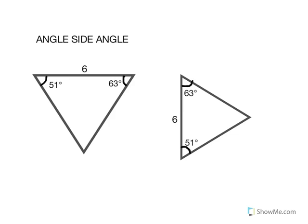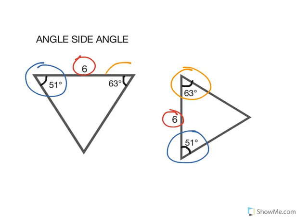Angle-side-angle shows congruence when we know two angles and the included side are equal. For example, we have 51 degrees, then the included side is a 6, then on the other side the angle is 63 degrees. Though one is rotated, it is congruent by angle-side-angle.